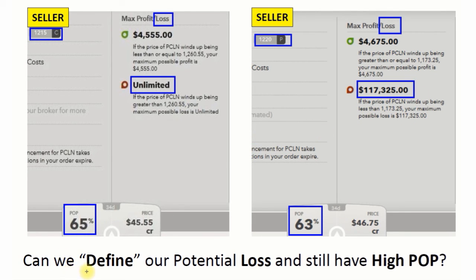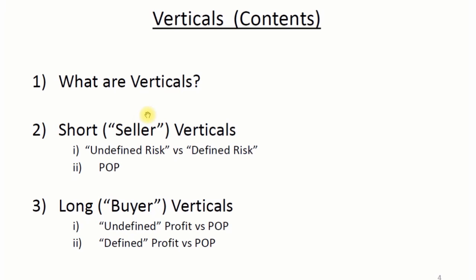So can we define our potential loss, take this edge off, and still have a high POP? We can — and we do that by something called verticals. We're going to define verticals. We're going to look at short verticals: short equals sell equals credit. We're going to look at undefined risk versus defined risk and the POP involved. And long equals buy equals debit, so we're going to look at those verticals as well — undefined profit versus POP and defined profit versus POP. So let's move forward.